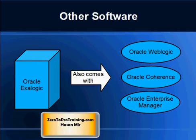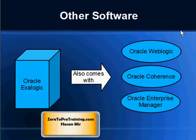Oracle Coherence is Java-based software that manages the memory across all the servers in the cluster — a pretty sophisticated piece of software for that purpose. Oracle Enterprise Manager is like the control panel to manage all the software running on different servers in the cluster. It can manage the application server and the database, though the database management only applies when a database is present.